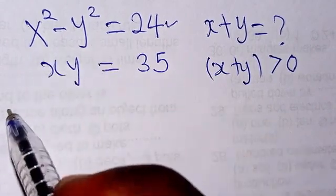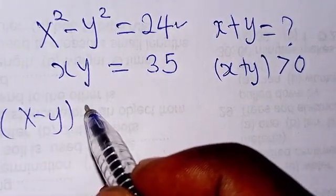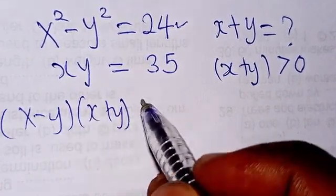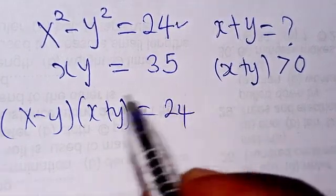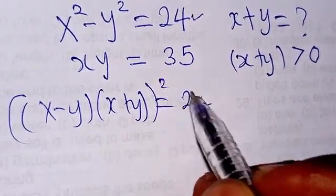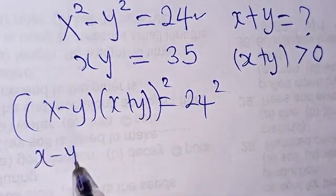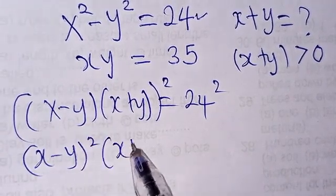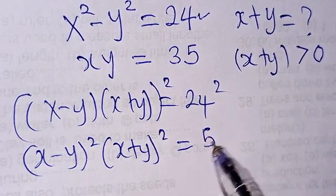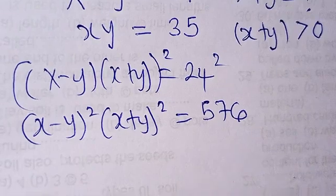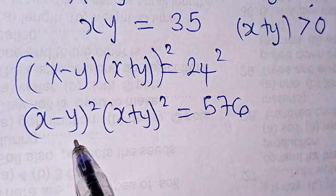We can rewrite the equation x squared minus y squared as a difference of two squares: x minus y times x plus y equals 24. Now we square both sides, distributing the power, so we have x minus y all squared times x plus y all squared equals 24 squared, which gives us 576.